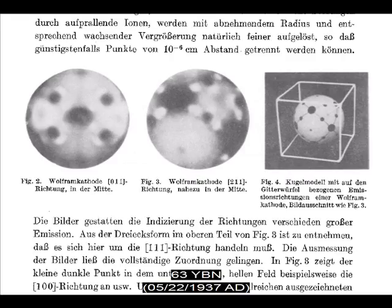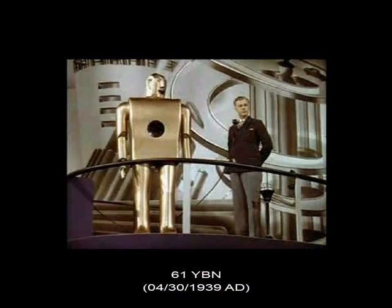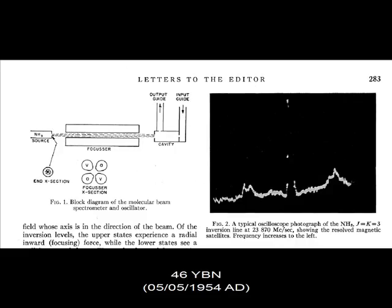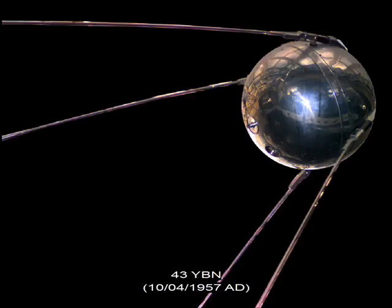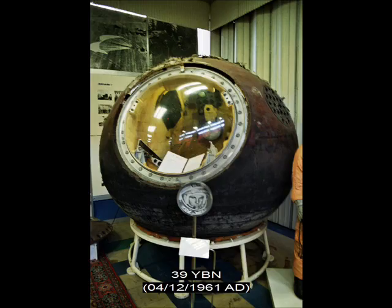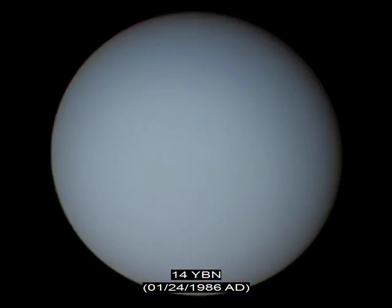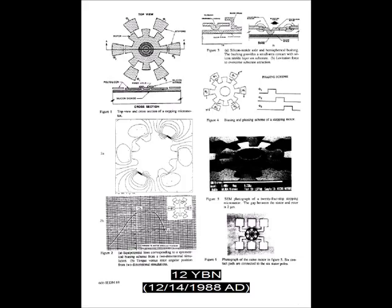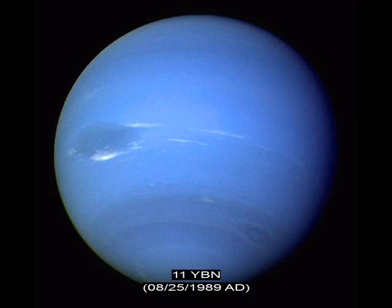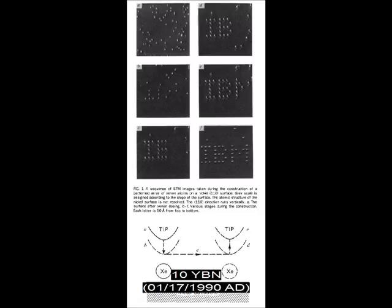Atomic fusion. Atomic fission. Picture of individual atoms. Bipedal robot. Structure of DNA understood. Maser. Human-made satellite. Ship impacts moon. Human orbits Earth. Humans walk on the moon of Earth. Ship lands on Mars. Ship reaches Jupiter. Ship reaches Saturn. Ship reaches Uranus. Microscopic motor. Ship reaches Neptune. Individual atoms moved.